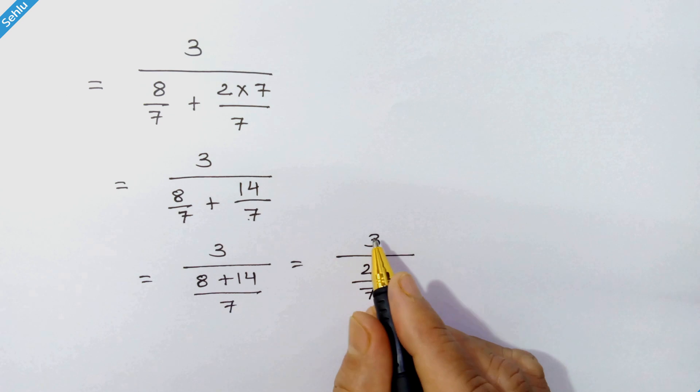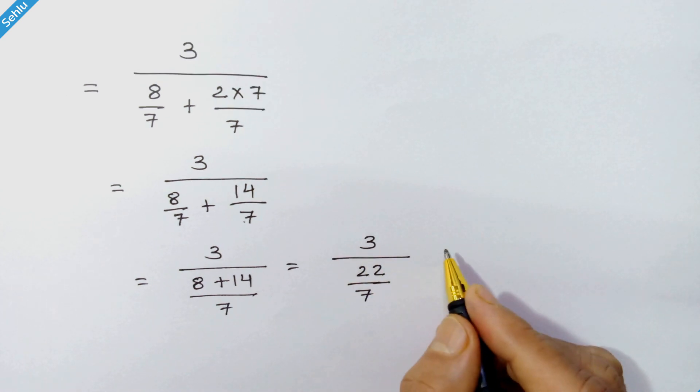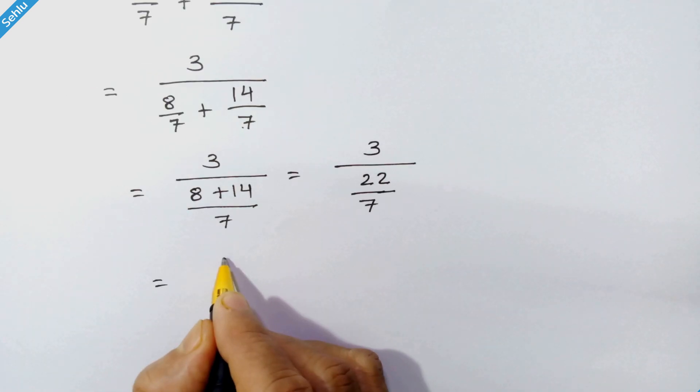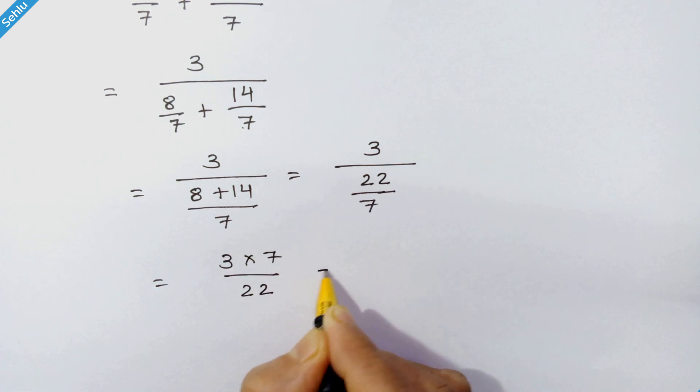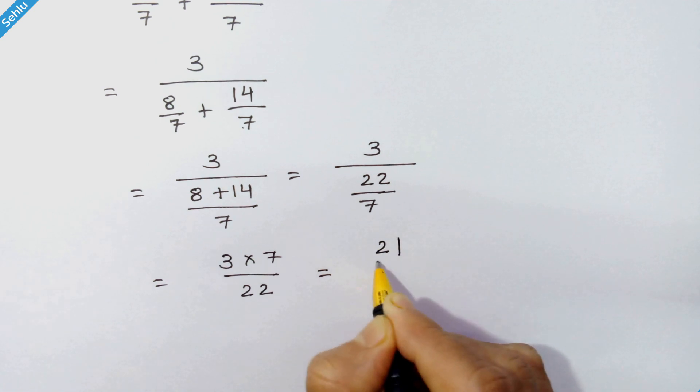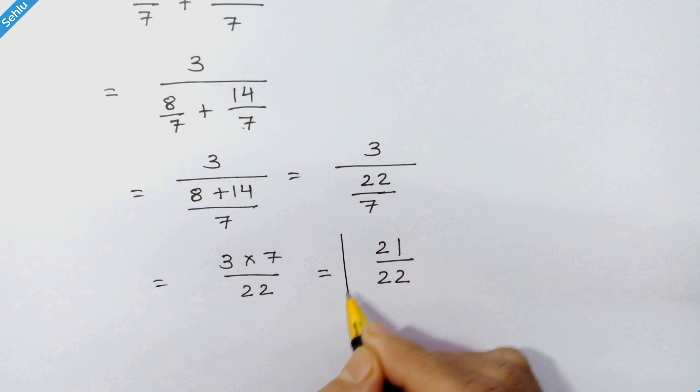This 7 will multiply with 3. So we have 3 times 7 upon 22, is equal to 21 upon 22. So 21 upon 22 is the simplified fraction and that's the answer.